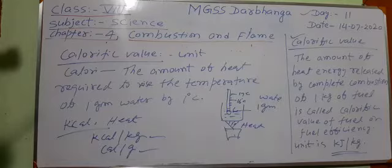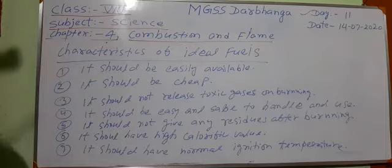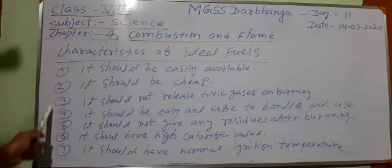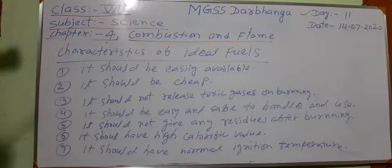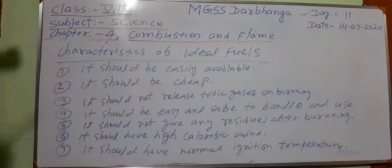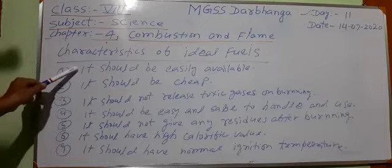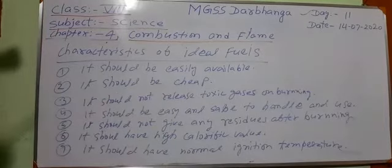Now we shall discuss ideal fuel. We have to read about ideal fuel. Ideal fuel means those fuels which can be used easily. There are some characteristics; all fuels are not ideal. On the basis of these characteristics we decide which fuel may be ideal. The first characteristic to be an ideal fuel is it should be easily available. If a fuel has all good qualities but is not easily available, then it is not an ideal fuel. Second, it should be cheap, so it can be used by all persons.